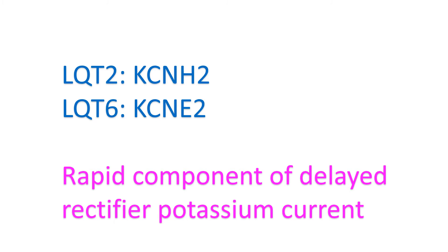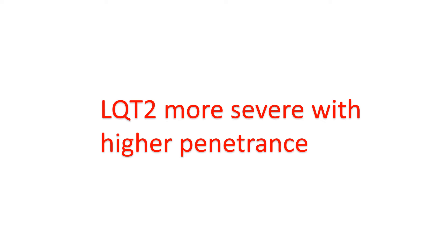Just as LQT1 and LQT5 are related to the same channel, LQT2 and LQT6 are related to the rapid component of the delayed rectifier current. KCNH2 encodes for the alpha subunit and KCNE2 encodes for the beta subunit. LQT2 is more severe and has a higher penetrance than LQT1, and females are more affected than males, while it is the other way round in LQT1.